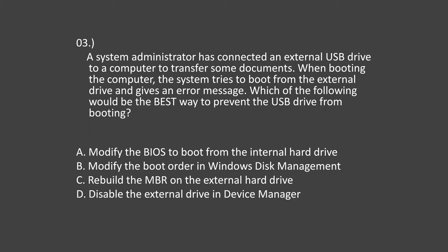Question number 3. A system administrator has connected an external USB drive to a computer to transfer some documents. When booting the computer, the system tries to boot from the external drive and gives an error message. Which of the following would be the best way to prevent the USB drive from booting? Option A: Modify the BIOS to boot from the internal hard drive. Option B: Modify the boot order in Windows Disk Management. Option C: Rebuild the MBR on the external hard drive. Option D: Disable the external drive in Device Manager.